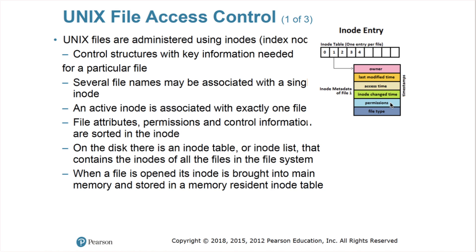UNIX file permissions use an abbreviated simple form of access control list. An ACL involves attaching a list of every object and what they can do to each file. For example, a file may have ACLs such that user A can read, user B can write, user C can read, and user D can read. UNIX simplifies permissions by only defining rules for three kinds of objects — three groups: the user, the group, and the owner. Permissions are set using inodes.